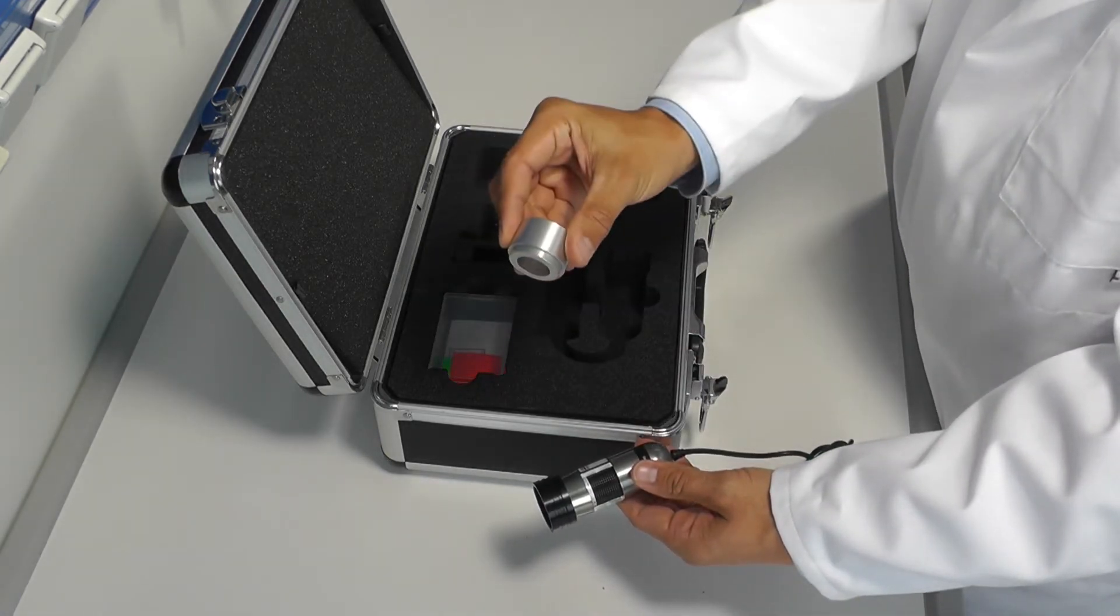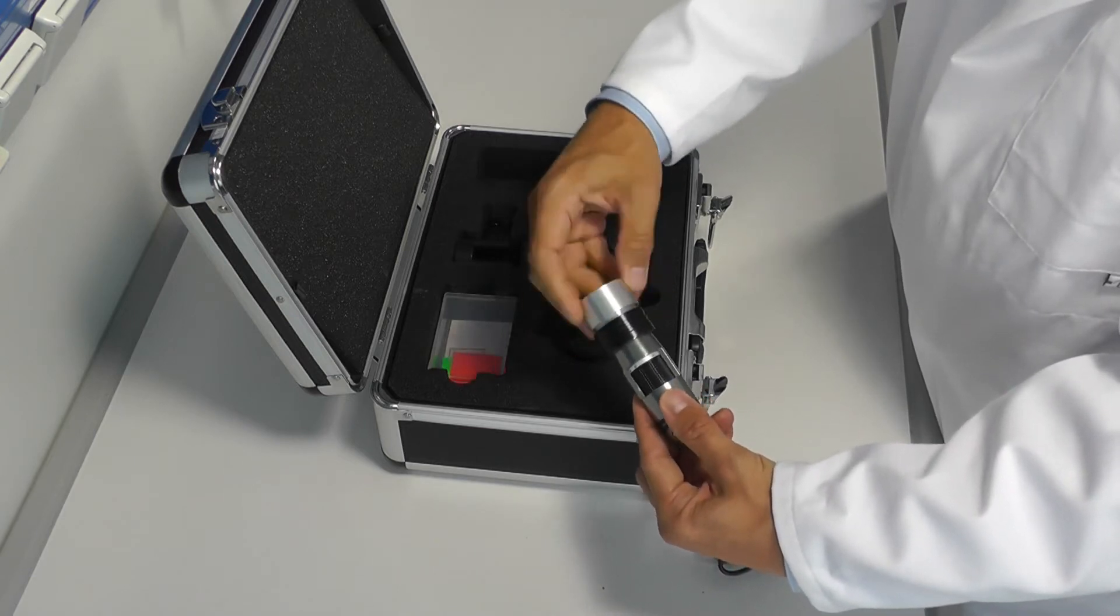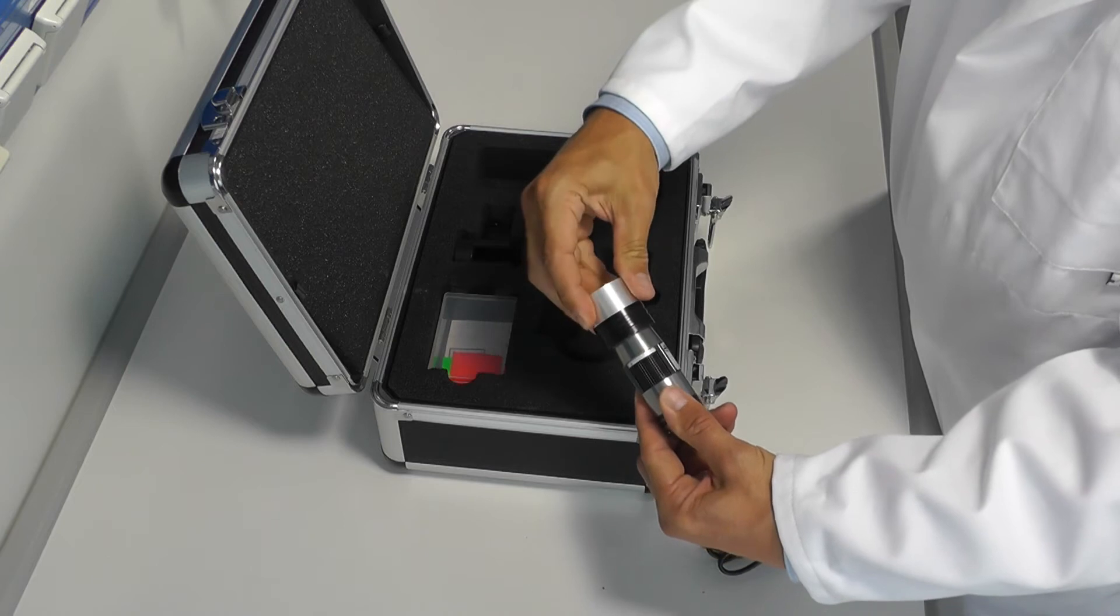Then there is an adapter tubus that is meant to define working distance to the sample and field of view. Simply screw it to the thread of the detector unit.